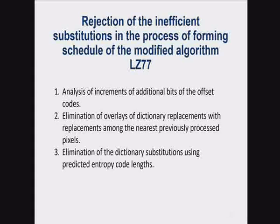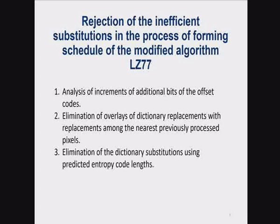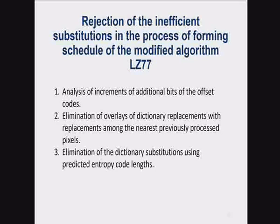In the process of forming a modified schedule of the LZ77 algorithm, it may happen that the replacement from the dictionary on the second pass will overlap with replacements among the nearest previously processed pixels of the first pass. This will not only reduce the replacement of the first pass but may eliminate it altogether if it is shorter than 3 literals. Dictionary substitutions have more substitutions and not fewer extra bits of the code than the nearest processed pixel substitutions, so this overlay can increase code length and be ineffective. Therefore, each overlay of the dictionary replacement on the part of the replacement of the next pixels should be eliminated by reducing the length of the dictionary replacement. In addition, for a replacement for previously processed pixels, it is not advisable to look for an extended replacement for the dictionary if it is followed by a replacement for previously processed pixels.